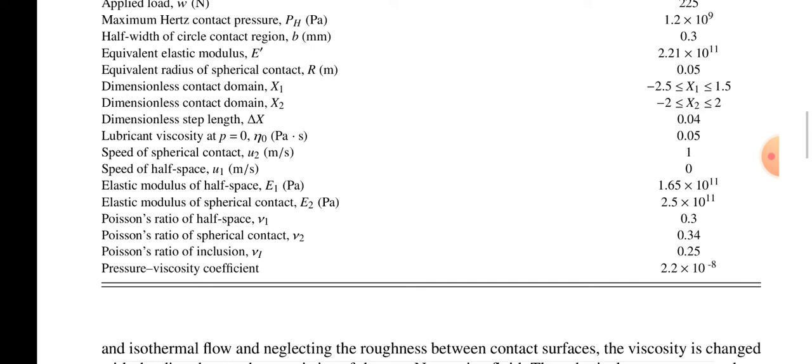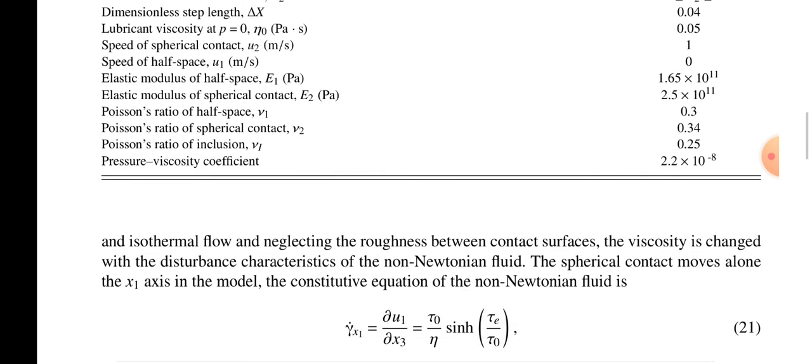Pressure viscosity coefficient is 2.2×10⁻⁸. We are considering the laminar and isothermal flow, neglecting the roughness between contact surfaces. These are some assumptions. The viscosity changes with the disturbance characteristics of non-Newtonian fluid. The spherical contact moves along the x₁ axis.